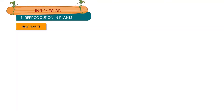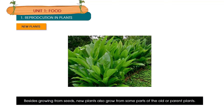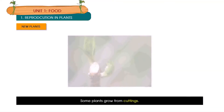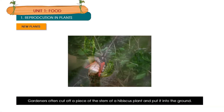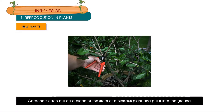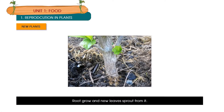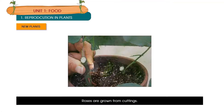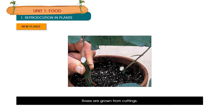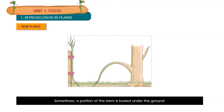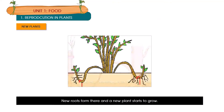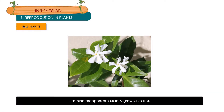Besides growing from seeds, new plants also grow from some part of the old or parent plants. Some plants grow from cuttings — gardeners often cut off a piece of the stem of a hibiscus plant and put it into the ground. Roots grow and new leaves sprout from it, and the stem becomes a new plant. Roses are grown from cuttings. Sometimes a portion of the stem is buried under the ground, new roots form there, and a new plant starts to grow. Jasmine creepers are usually grown like this.